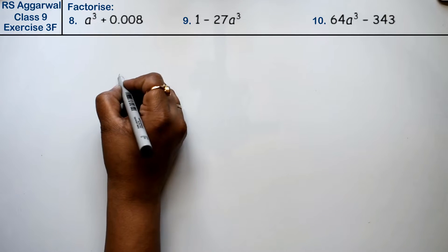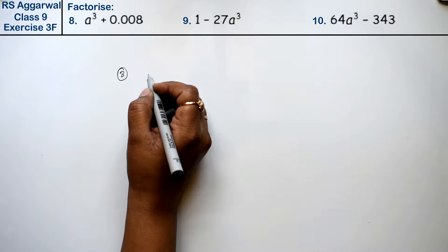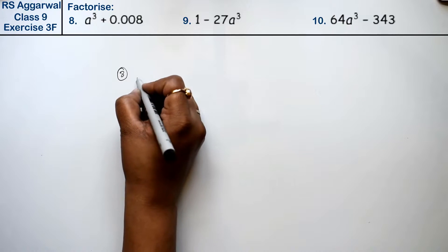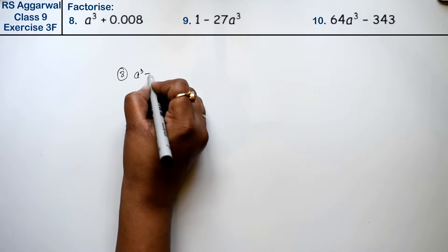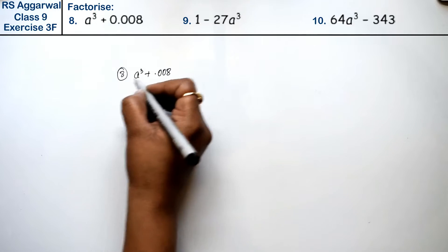Let's do question number 8 of exercise 3F, that is factorization of polynomials. Question number 8 is a³ plus 0.008.